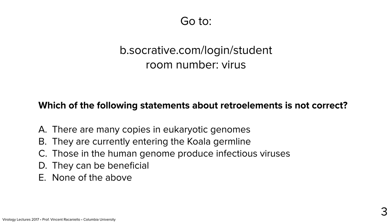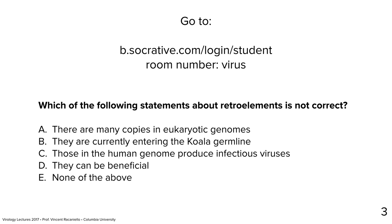Final quiz: Which statement about retro elements is not correct? Options: there are many copies in the eukaryotic genome; they are currently entering the koala germline; those in the human genome produce infectious viruses; they can be beneficial; or none of the above. The answer is that those in the human genome produce infectious viruses — that is false. They produce particles but not infectious viruses. They are currently entering the koala genome, and they can be beneficial.